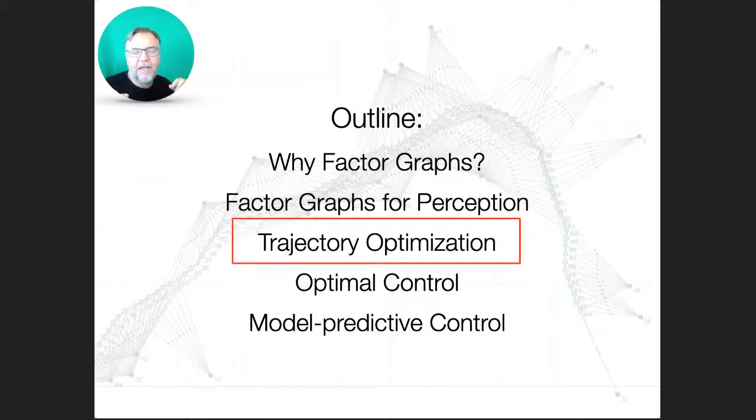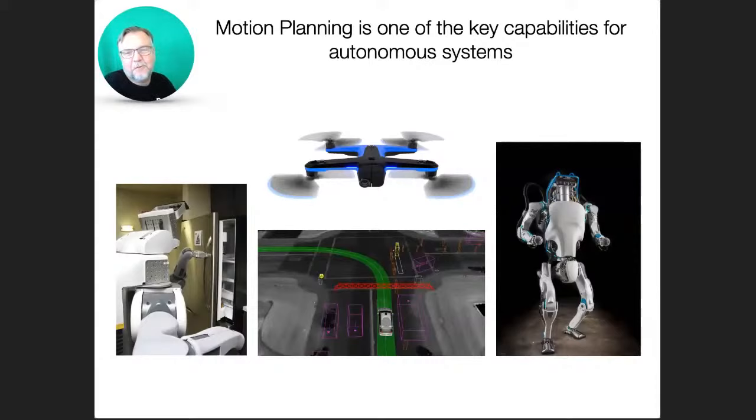So let's start with motion planning. That's of course one of the key capabilities for autonomous systems, right? Be it manipulation motion planning, in autonomous systems like the Skydio drone or in this case, the Waymo planner, or motion planning for humanoids. So in all of these contexts and many more, motion planning is a key problem.